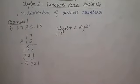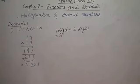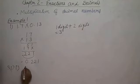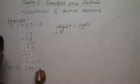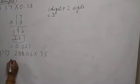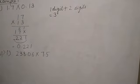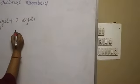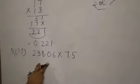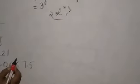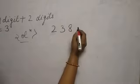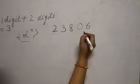Let's take another example from Exercise 2.6, Question 1, Part I. It is 238.06 multiplied by 7.5. First, we will ignore the decimals and do simple multiplication: 23806 multiplied by 75.